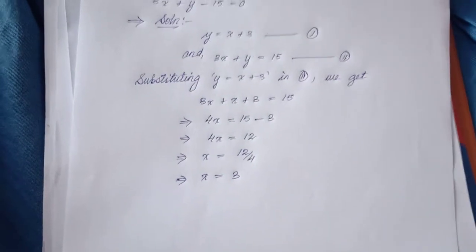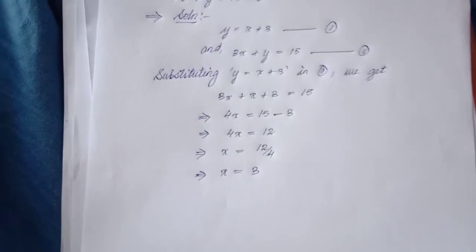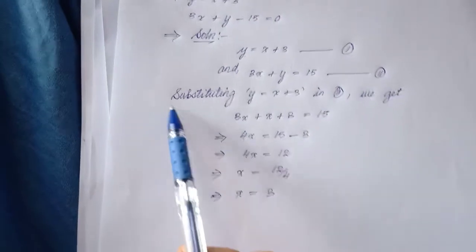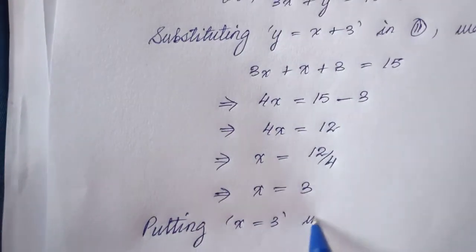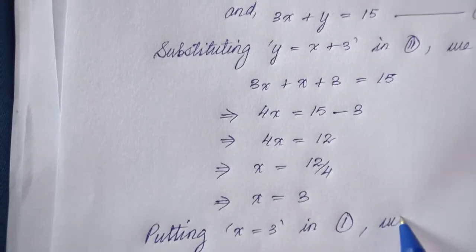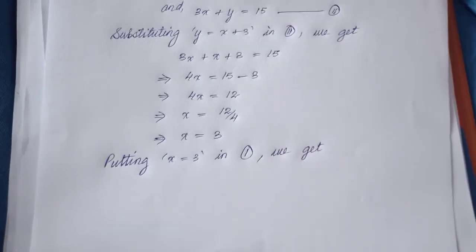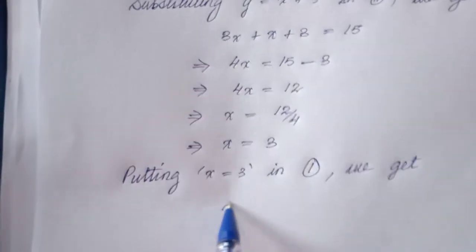I will have to substitute the value of x in equation 1. So I will simply put the value of x in equation 1. As I already use substitution here, I can simply use putting. Putting x is equal to 3 in equation 1, we get: So what is equation 1? Equation 1 is y is equal to x plus 3. So instead of x, I can put 3: 3 plus 3.